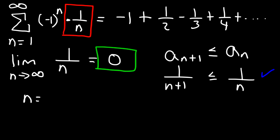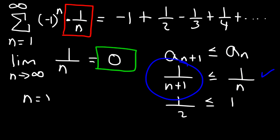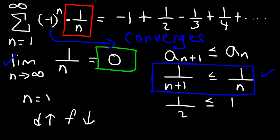We can see this is automatically true for all n. For example, if n equals 1, a sub n plus 1 is 1 over 2 and a sub n is 1 — and 1 is greater than one half. Since the denominator n plus 1 is greater than n, that fraction has to be less than the other. Increasing the denominator decreases the fraction's value. So the series passes the divergence test and has a decreasing sequence — by the alternating series test, it converges.